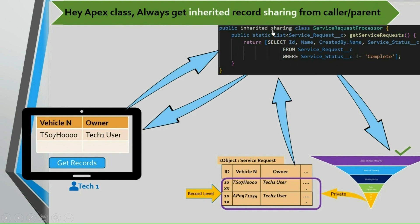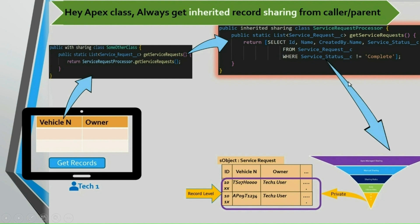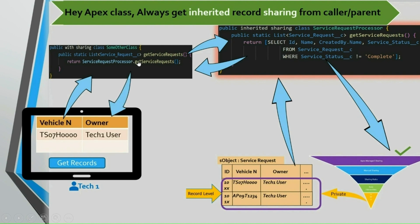Inherited sharing makes more sense when combined with caller variations. In this combination, the intermediate caller class uses with sharing, and our actual class uses inherited sharing. When tech1 user invokes the method, the caller class invokes our actual class. Since our class has inherited sharing, it inherits the mode from the caller. The caller's mode is with sharing — that is, user mode — so this SOQL runs in user mode respecting the record level sharing accesses, and it returns only one record.